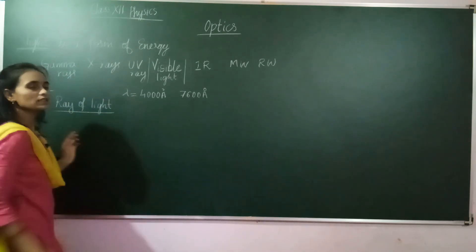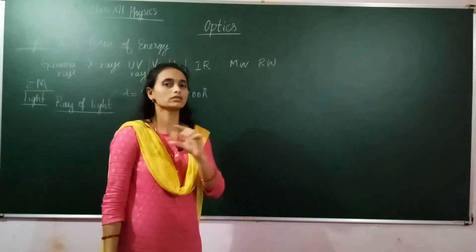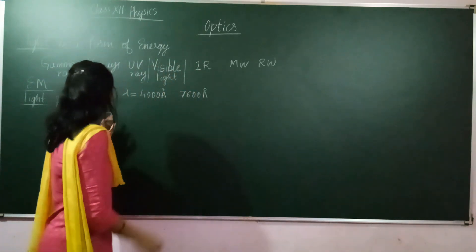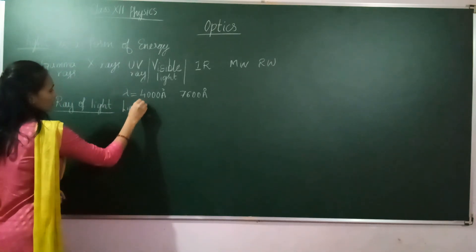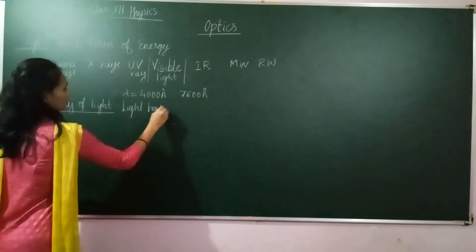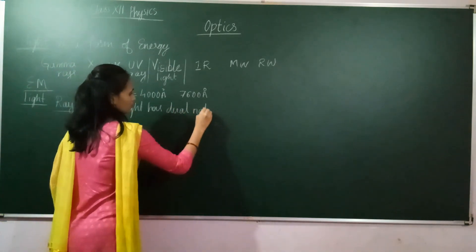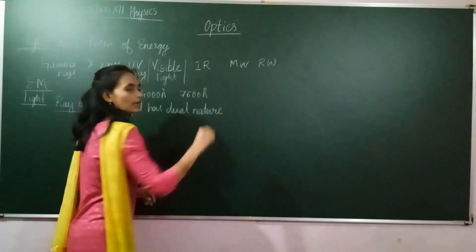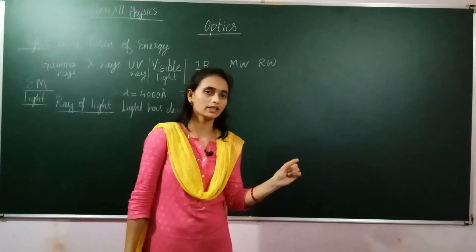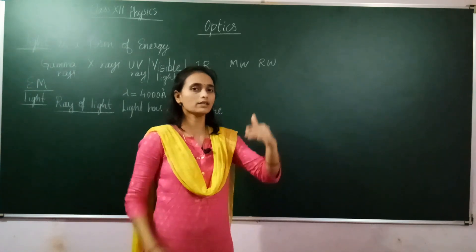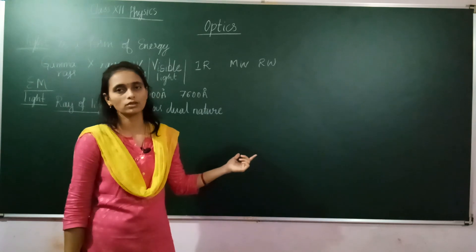A ray of light is the direction in which light is propagating. Now, light has a dual nature — it can travel in a straight line direction, like a ray, or it can propagate in the form of waves.